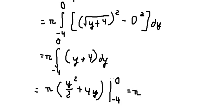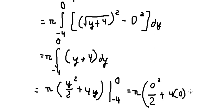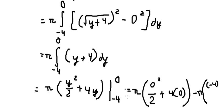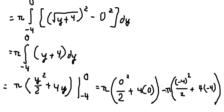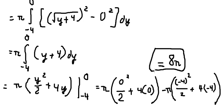Now we have the final answer. Substituting zero gives zero, and substituting negative four we evaluate the expression. Calculating this gives us eight pi, and that is the final answer. This is the end — thank you for watching.